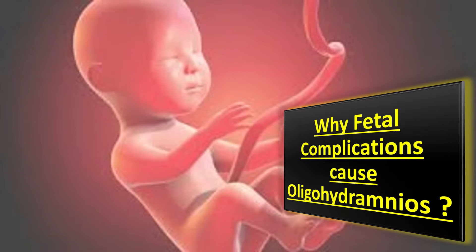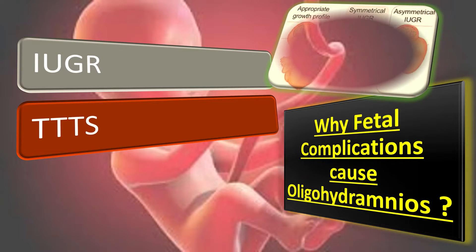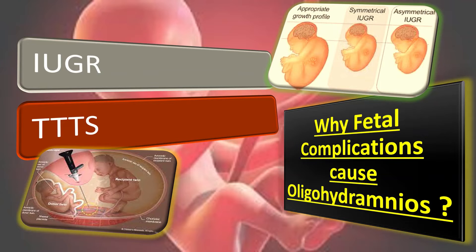Now let us explain how fetal complications cause oligohydramnios, like IUGR and TTTS. About 85 percent of IUGR infants have oligohydramnios. This occurs because blood flow from peripheral organs like the kidneys is diverted to the brain, and renal hypoperfusion and urinary flow rates are commonly reduced. An amniotic fluid index of less than 5 cm further increases the risk of IUGR. In TTTS — twin-to-twin transfusion syndrome — there is a state of transfusion causing the donor twin to have decreased blood flow, retarding development and growth, and also decreased urinary output leading to oligohydramnios.